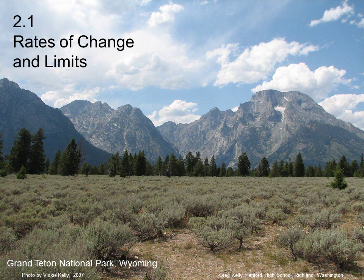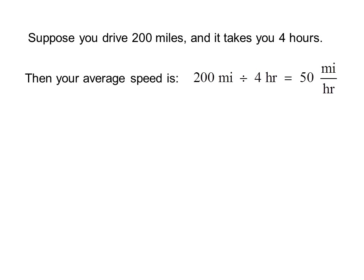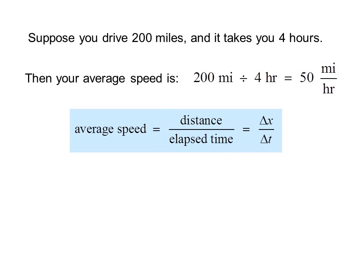Here we see Grand Teton National Park in Wyoming. Suppose you drive 200 miles and it takes you 4 hours. Then your average speed is 200 miles divided by 4 hours, equals 50 miles per hour. Average speed equals distance divided by elapsed time, or delta x over delta t.